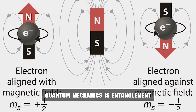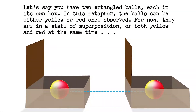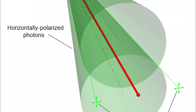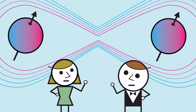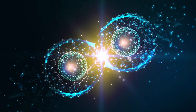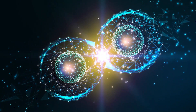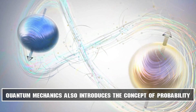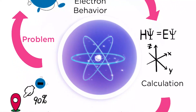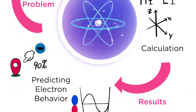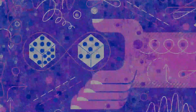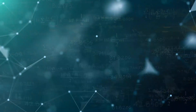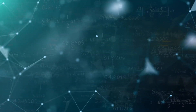Another important concept in quantum mechanics is entanglement. When two particles are entangled, their properties become linked in a way that cannot be explained by classical physics. For example, if two entangled particles are separated by a large distance and the state of one particle is measured, the state of the other particle will instantly change, regardless of the distance between them. Quantum mechanics also introduces the concept of probability: because quantum particles exist in superpositions, their properties can only be described probabilistically.